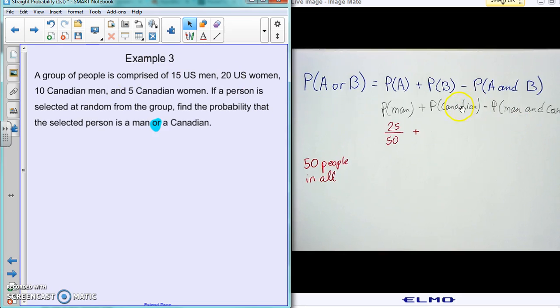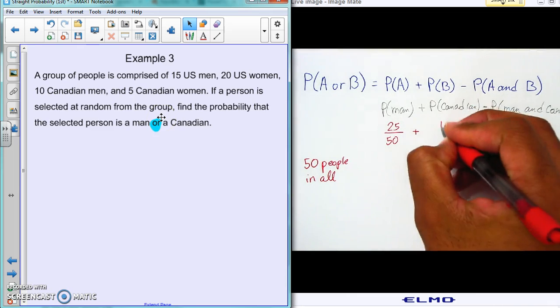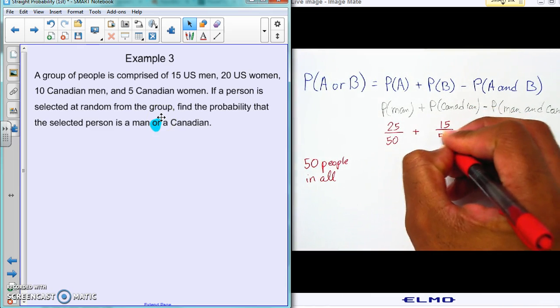For the next part, Canadian - how many people are Canadians? So there's 10 Canadian men and 5 Canadian women, so in all that is 15 Canadian people.